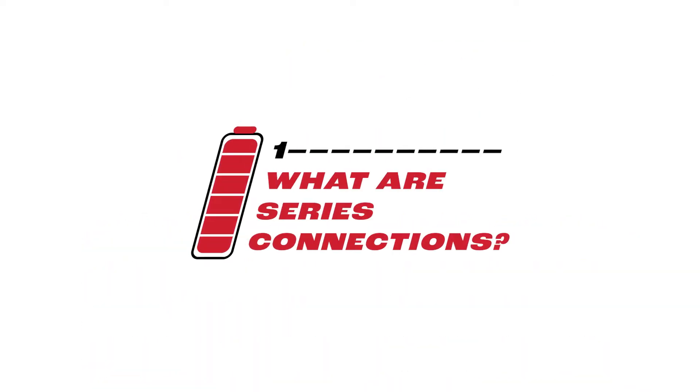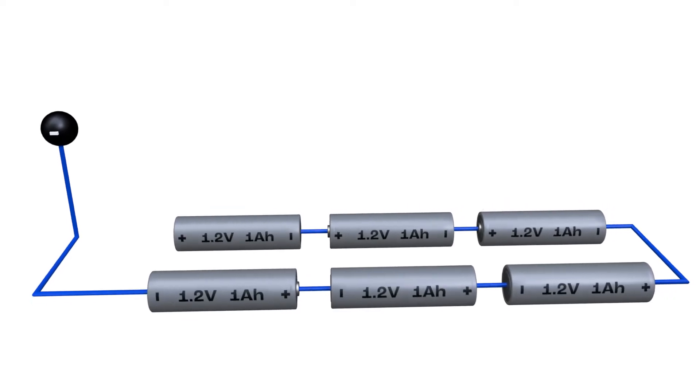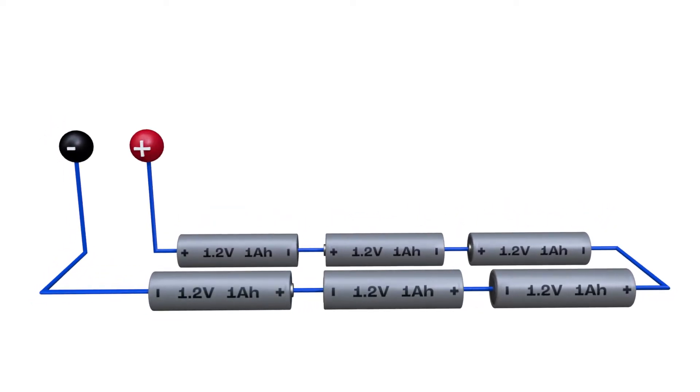What are series connections? Series connections are created by connecting the negative terminal of one cell to the positive terminal of the next cell and so on to increase the overall voltage of the battery pack while its capacity and amp power remains the same.